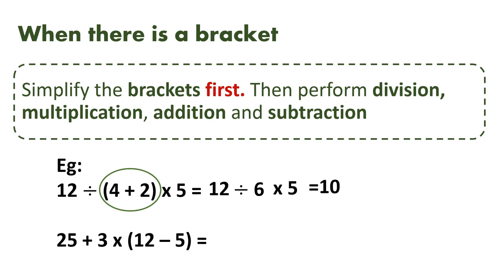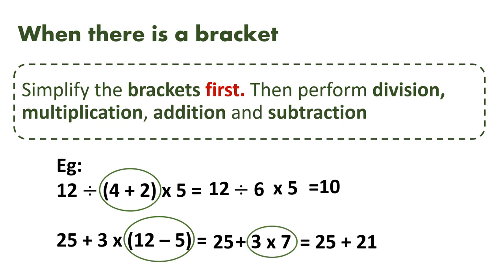Let us look into another example: 25 plus 3 into (12 minus 5). The brackets must be simplified first. 12 minus 5 is 7. I write the expression as 25 plus 3 into 7. In the next step, we have two operations — addition and multiplication. With our previous knowledge, we have to perform multiplication first. So 3 into 7 is 21, and I write 25 plus 21. That gives us 46, which is our final answer. This is how we simplify when there is a bracket in the expression given.